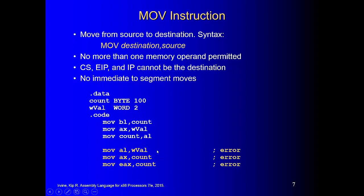When you use the move instruction, you have to make sure two operands have the same size. Second example: move count into AL — count is 1 byte but AL is... also mismatched. Third example: count is 1 byte but moving into a 4-byte register is a mismatched size, causing an error.